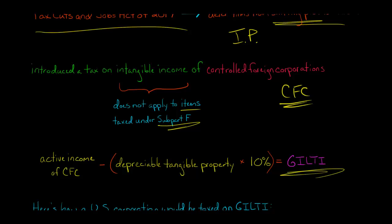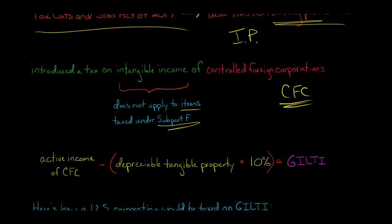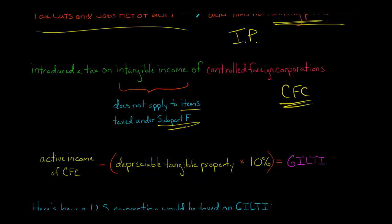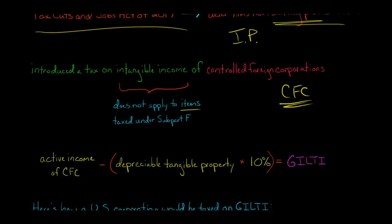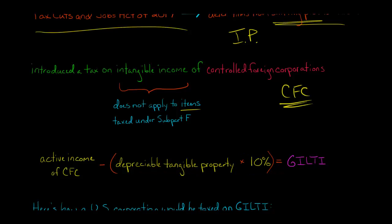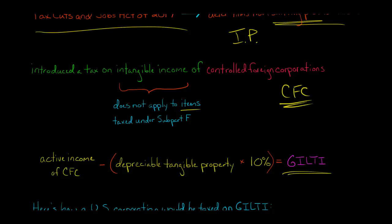The way you calculate GILTI is you take the active income of the foreign corporation and then subtract the foreign corporation's depreciable tangible property times 10%. The intuition is that this foreign company has tangible property — maybe buildings, equipment — used in the business, and we expect a 10% return on that depreciable tangible property. Any income earned above and beyond that 10% return, Congress says must be a return of intangible income, and that's what's counted as GILTI.